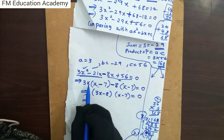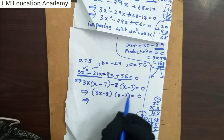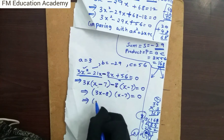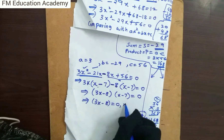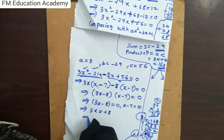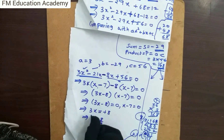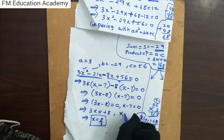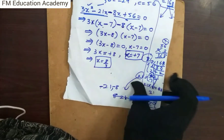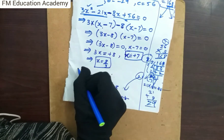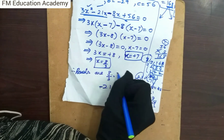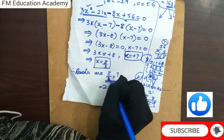Setting each factor to zero: 3x − 8 = 0 gives x = 8/3, and x − 7 = 0 gives x = 7. Therefore, the roots are x = 8/3 and x = 7. This is the answer. Hope you have understood the video. Thank you for watching.